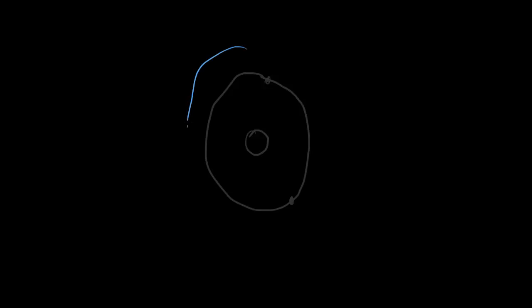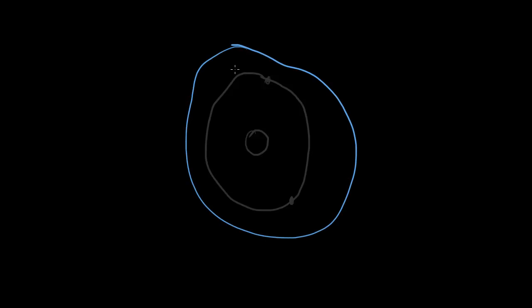First of all I'm going to start off with the structure of the atom. The atom basically consists of a nucleus at the center, and that is surrounded by electrons. The electrons basically surround the nucleus in specific orbitals.